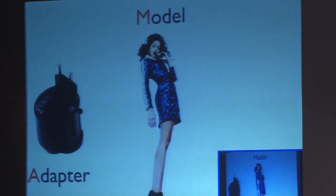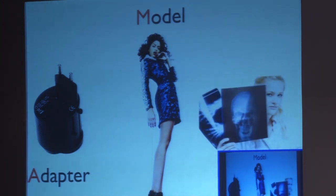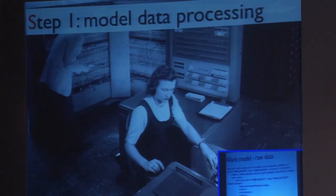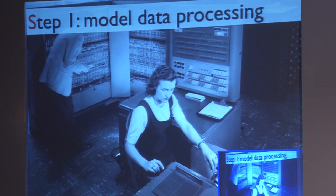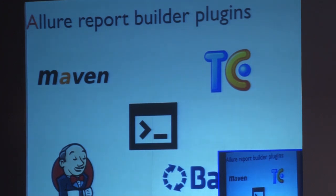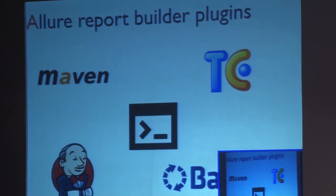Now we have an adapter and our model filled with data — let's talk about the report itself. Since our data model contains only raw data, we first process it to get statistics and calculated values, and transform the XML into lightweight JSON. Then we use AngularJS to create a beautiful Web 2.0 HTML report, as you can see on the demo link. This can be done via a command-line tool, a Maven plugin, or CI tool plugins for Jenkins, TeamCity, and Bamboo.